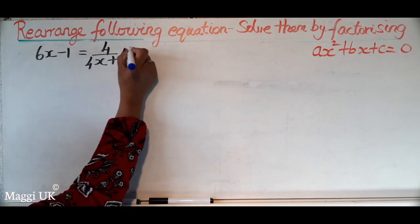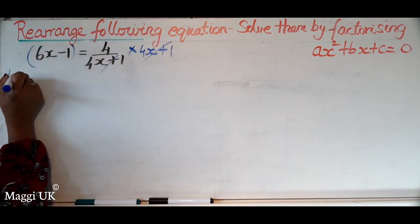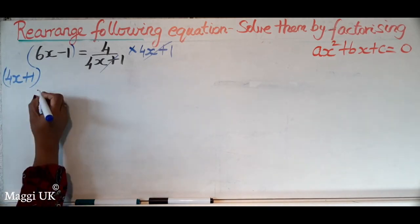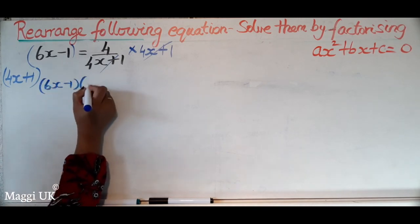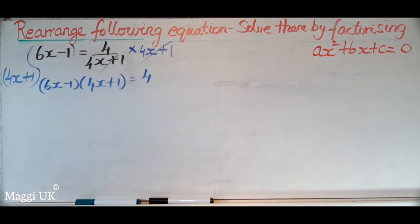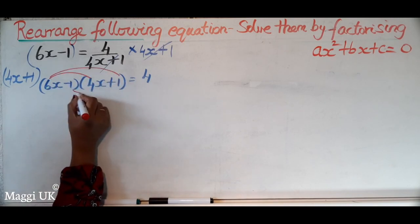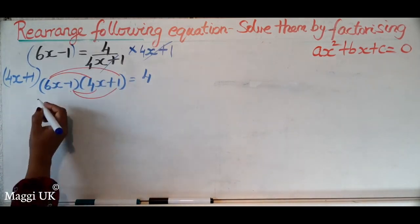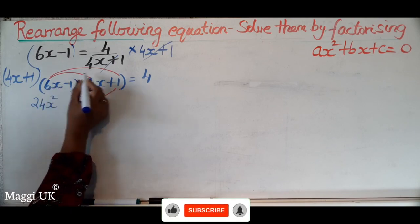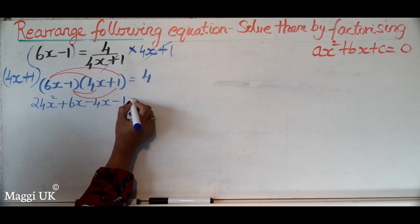So we have (6x minus 1)(4x plus 1) equals 4. Now we expand the bracket using the FOIL method. 6x times 4x is 24x squared, then plus 6x, minus 4x, minus 1 equals 4.